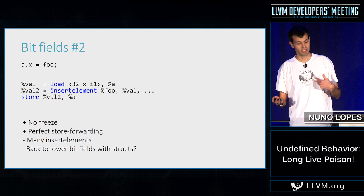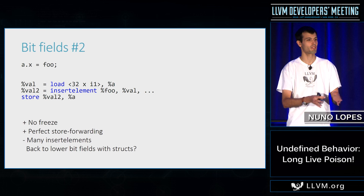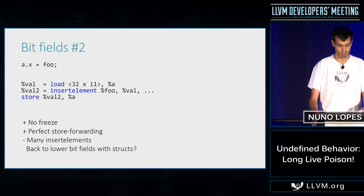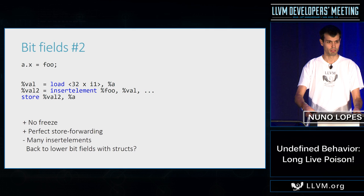The caveat is that you may need a lot of insert elements, or we can go back to lowering bit fields the way Clang did originally — using LLVM structs. But at that point the performance was not good because the code gen was not good for these kinds of things, though we may want to revisit that. This is more of a long-term plan to improve how bit fields are lowered.